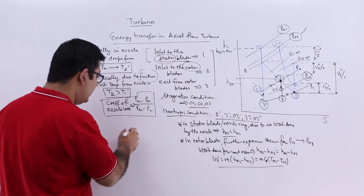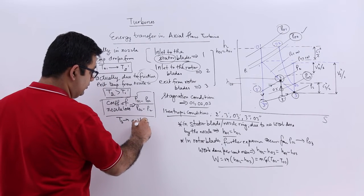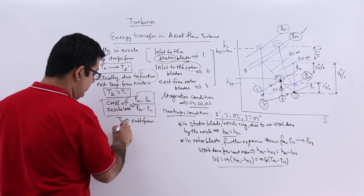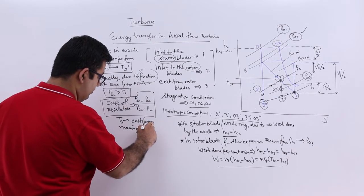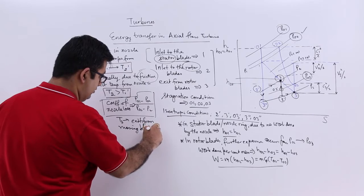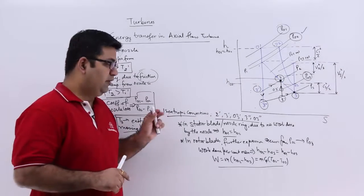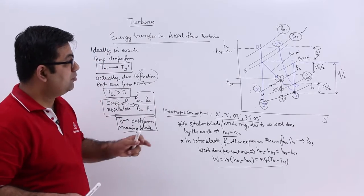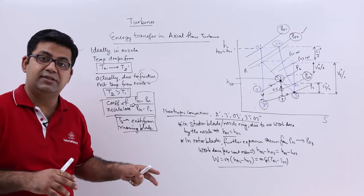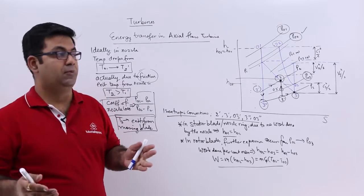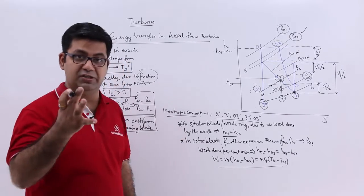So T3 is the exit temperature from the moving blades. In going from the stator blades to the rotor blades, there is a certain amount of loss. These losses in blades are due to 4 reasons.